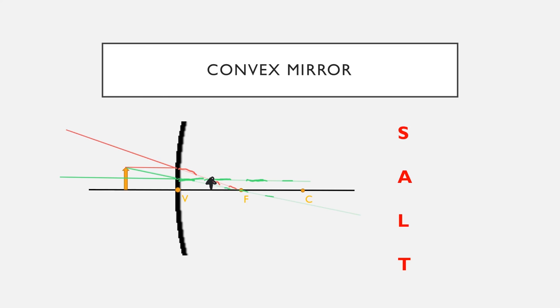So in this case, and as will be with every case for convex mirrors, the image is smaller than the object. It's upright as in pointing in the same direction.